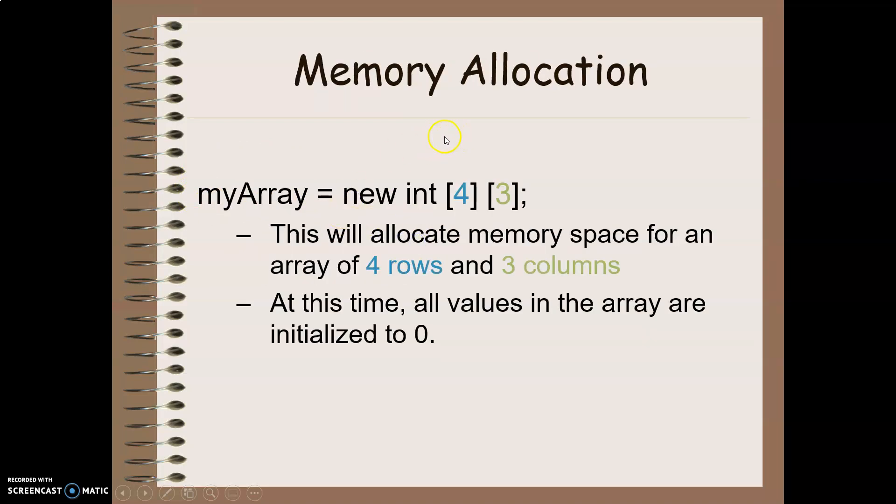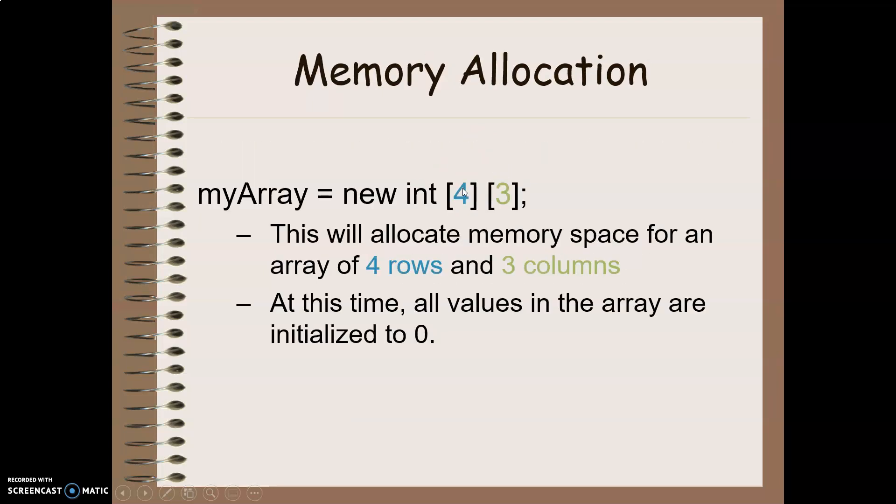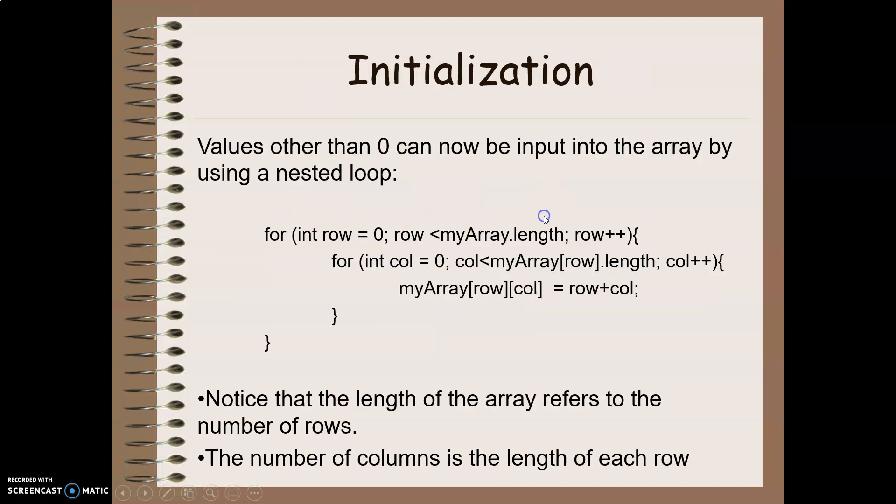The next step we have is allocating the memory. So how much memory do we have to set aside to store that set of integer values or strings or doubles or whatever other data type we're going to work with? So we do this by saying myArray equals new integer array. So this is the data type that I'm working with. And then I set the number of rows and the number of columns that I'm going to have in my two-dimensional array. So this time we initialize all the values to the default value. So for integers that would be zero.